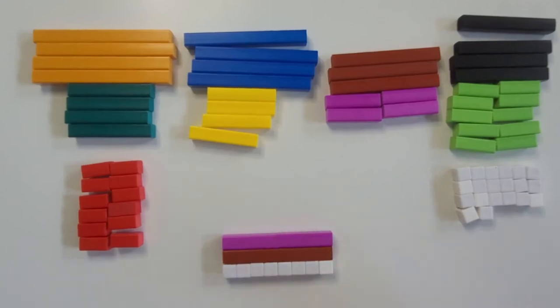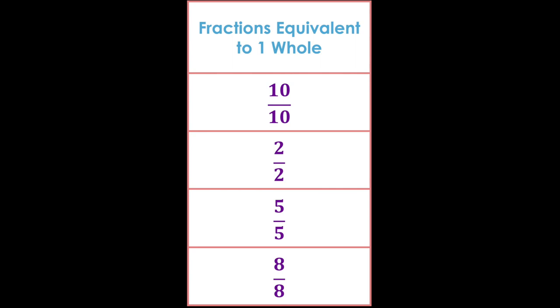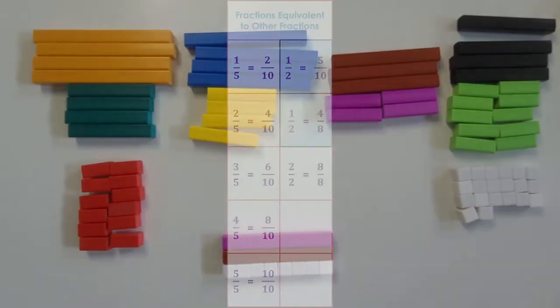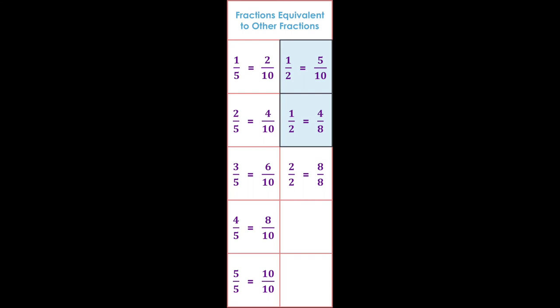So far with our examples, we've learned that ten tenths, five fifths, two halves, and eight eighths are all equivalent to one whole. And we've also learned that five tenths and four eighths are both equivalent to one half.